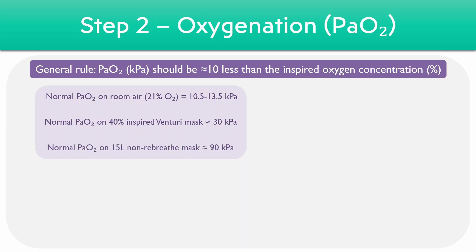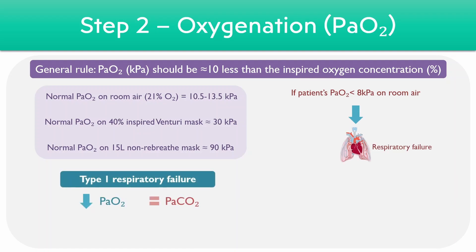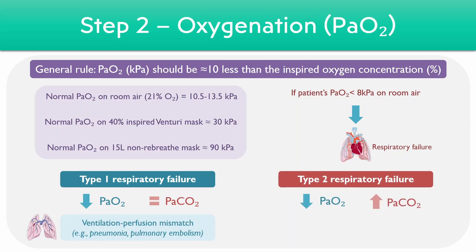If a patient is wearing a 15-litre non-rebreather mask, which is very close to 100% oxygen, we would expect the PaO2 to be 100 minus 10, or 90 kilopascals. In situations where the partial pressure of oxygen goes below 8 kilopascals on room air, this is deemed a respiratory failure. Type 1 respiratory failure involves a reduction in the PaO2 but a normal carbon dioxide level, seen in conditions with ventilation-perfusion mismatch such as pneumonia or pulmonary embolism. Type 2 respiratory failure involves reduced oxygen but an increased carbon dioxide — hypercapnia — seen in conditions involving alveolar hypoventilation, such as COPD, obstructive sleep apnea, and restrictive lung diseases.